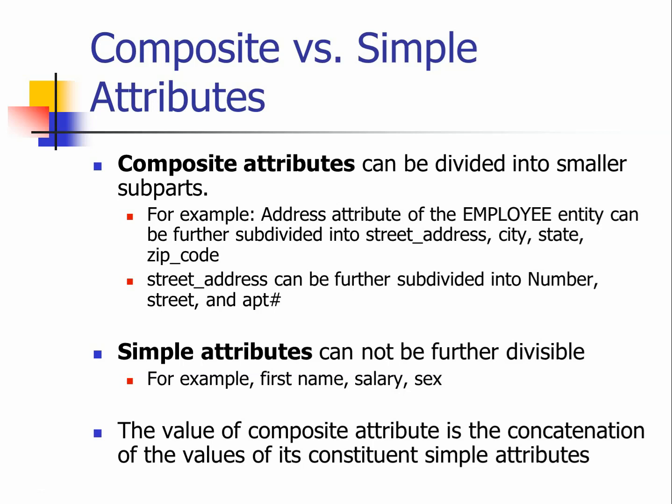The same thing applies to your name. Most of the time, forms separate it into first name, middle name, and last name — that is another good example of a composite attribute. On the other side, if an attribute cannot be further divided, such as your first name, salary, or gender, those are considered simple attributes. Most attributes we describe are simple attributes; occasionally we go into a more complicated composite format.